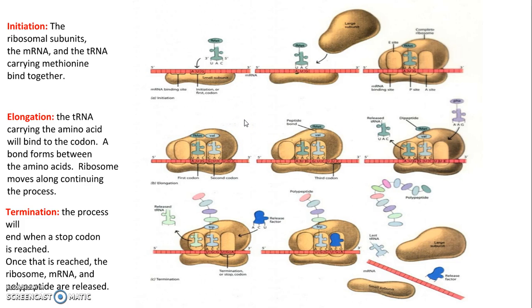The ribosome continues to move along, and it continues adding the amino acids. Lastly, you have termination. The process will end when a stop codon is reached. So once they reach a stop codon, it brings in a release factor that binds to that site, releasing the ribosome, mRNA strand, and polypeptide chain.